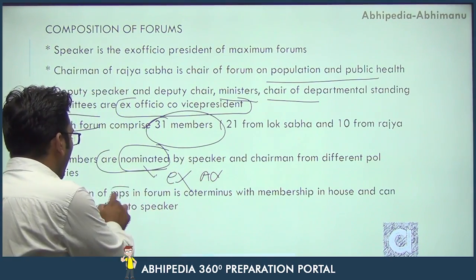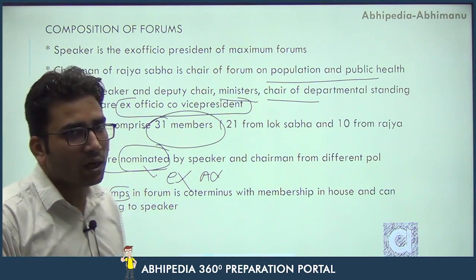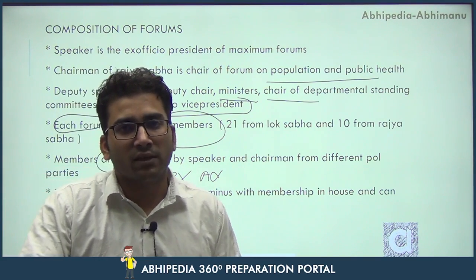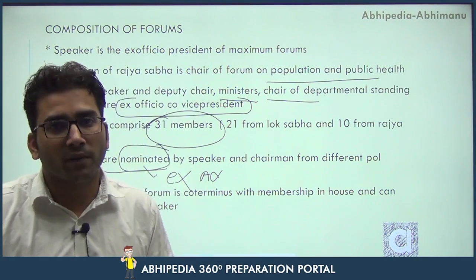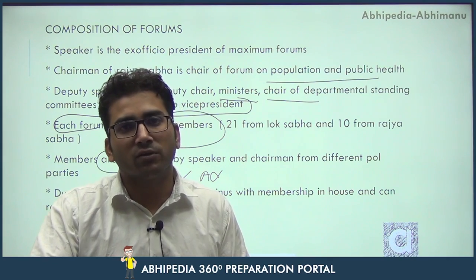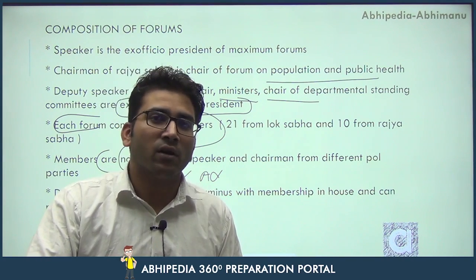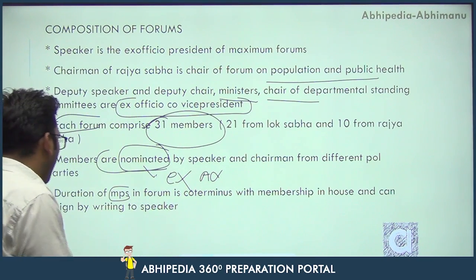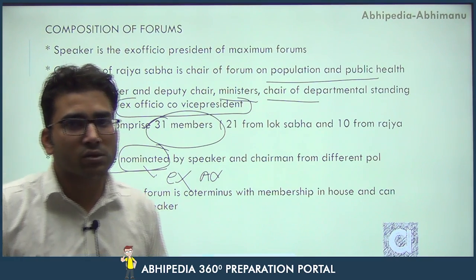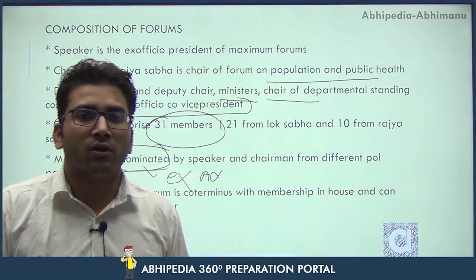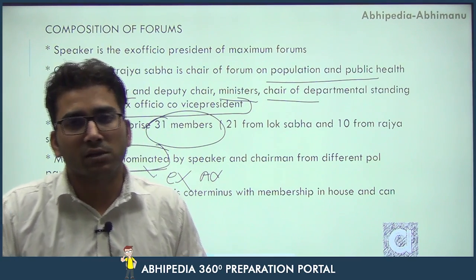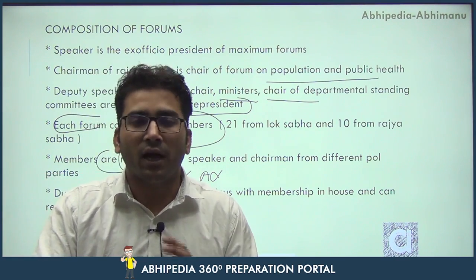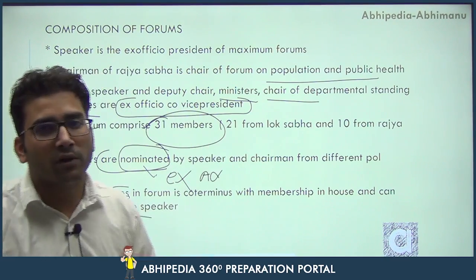The duration of MPs in the forum is co-terminus with their membership in the house, which simply means that when you resign, are disqualified, or are dissolved as an MP from the membership of the house, you are automatically out of the parliamentary forums. A member can also resign by writing to the Speaker. The resignation is given to the Speaker in the case of seven forums and to the Chairman in the case of the forum on population and public health.